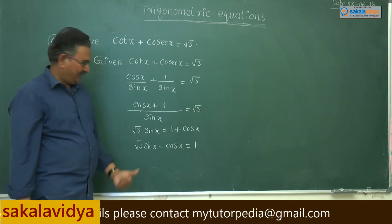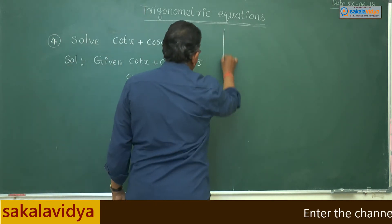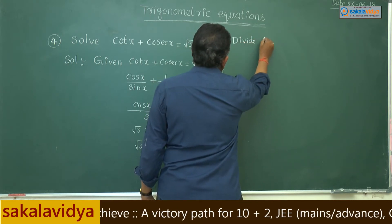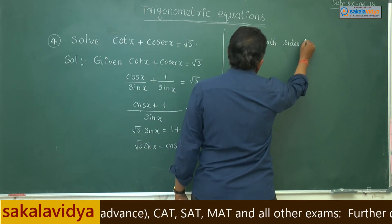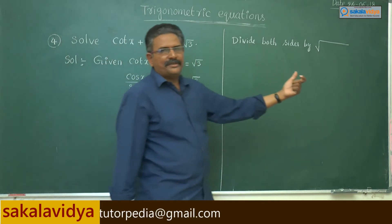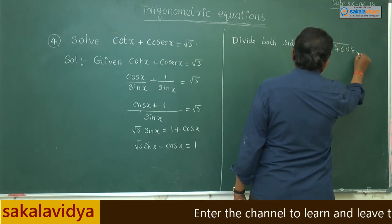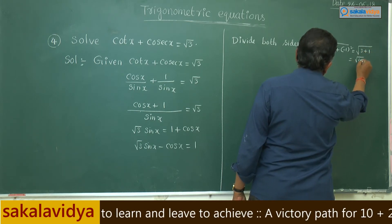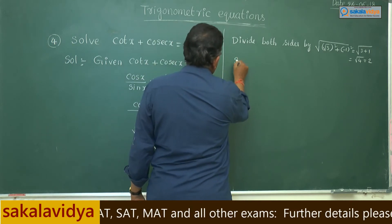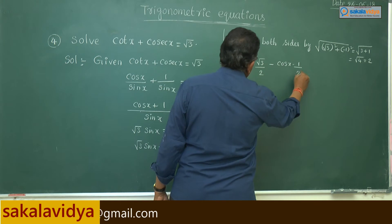Transposing cos x to the left hand side, we get root 3 sin x minus cos x equals 1. This is in the form of a sin x minus b cos x equals c, so now we can solve. Here a stands for root 3 and b stands for 1. Dividing both sides by root of a squared plus b squared: root 3 squared plus 1 squared equals 3 plus 1, which is root 4 equals 2. So we divide both sides by 2.